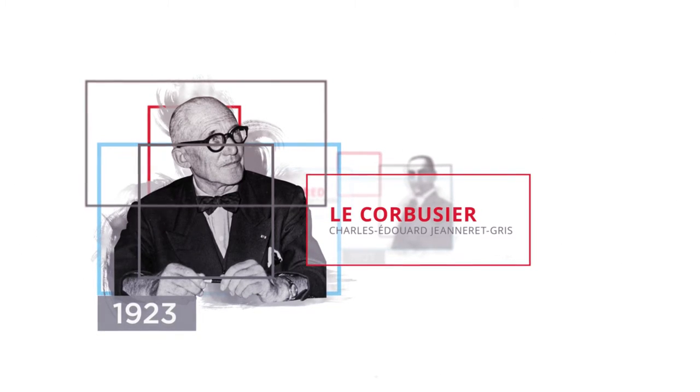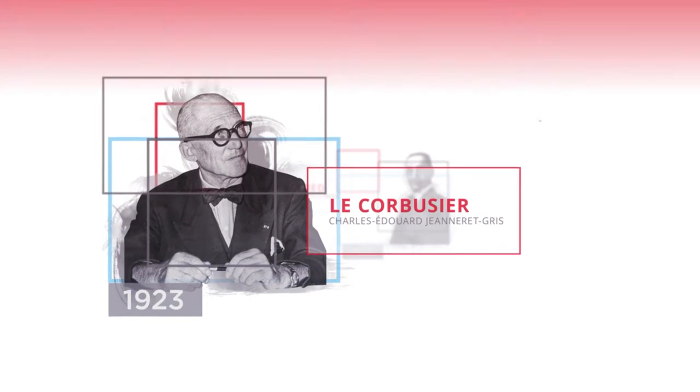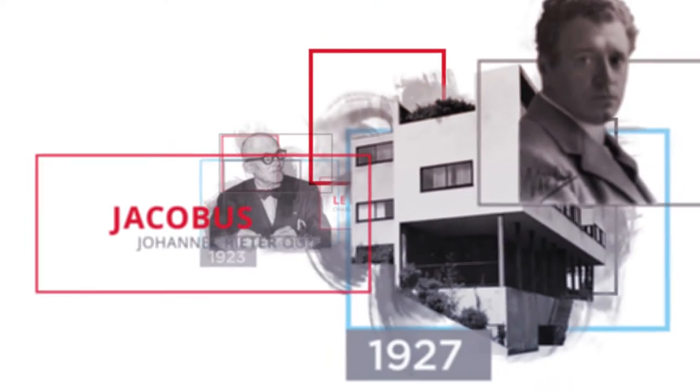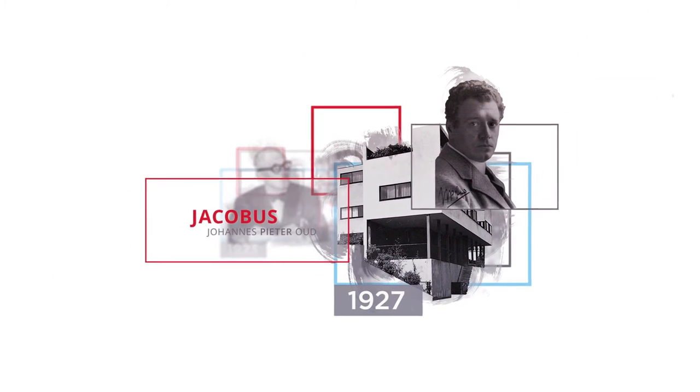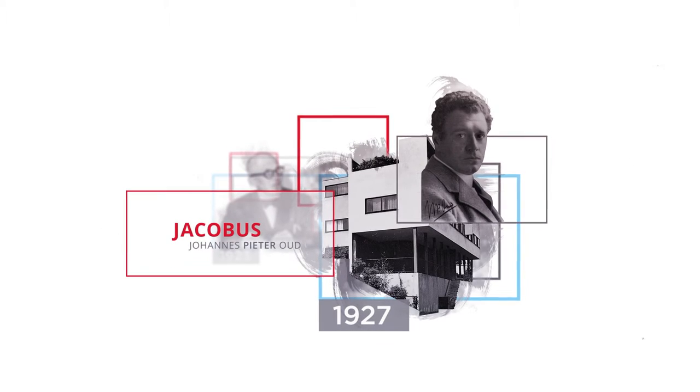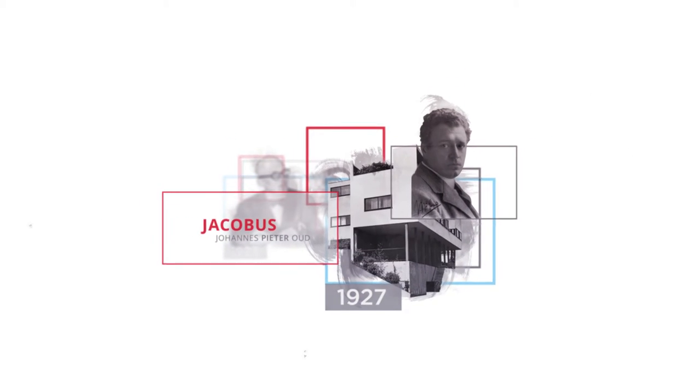In 1927, the Weissenhof Siedlung was built as a model settlement showing how to utilize the sun, and other modernist model settlements based on the light, air, and openness principle were to follow in cities around Europe.